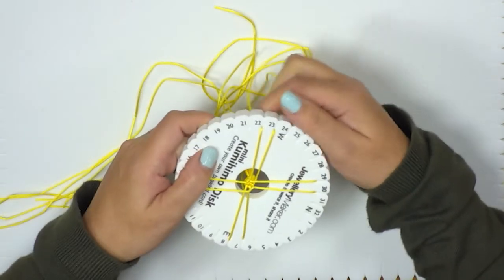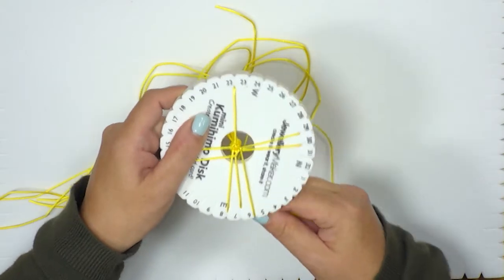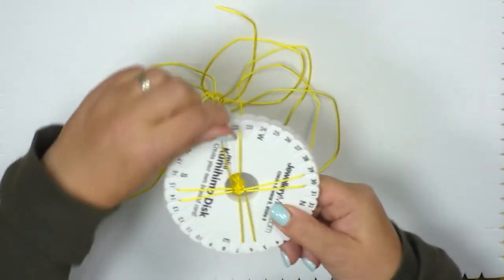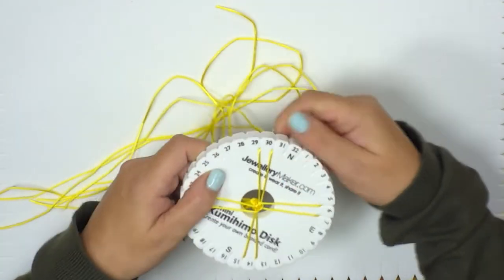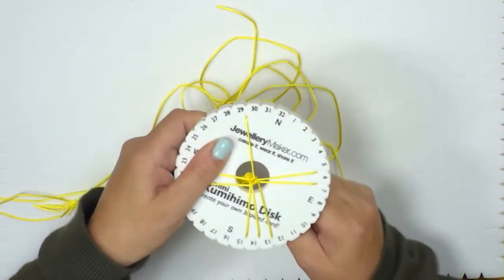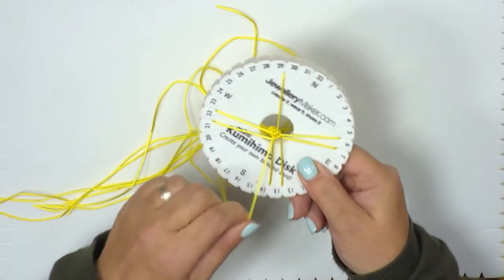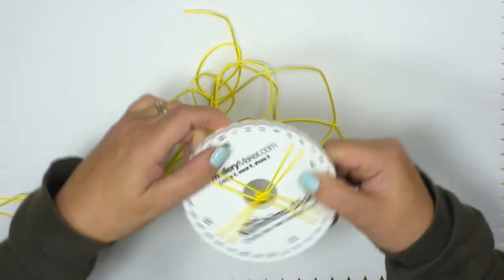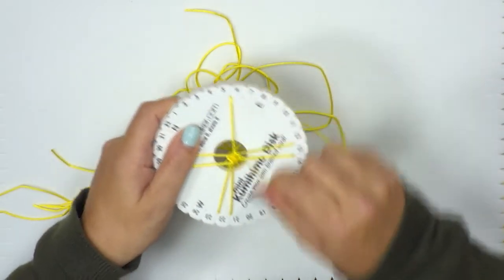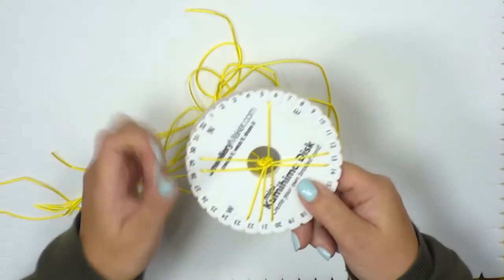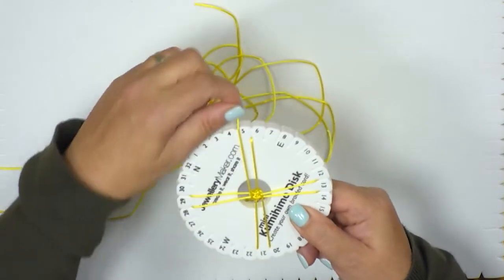So you're going to carry on braiding like this until you've got your desired length. And as you can see you can actually go quite quick at just moving those two cords up and down. So top right to bottom right, bottom left to top left.